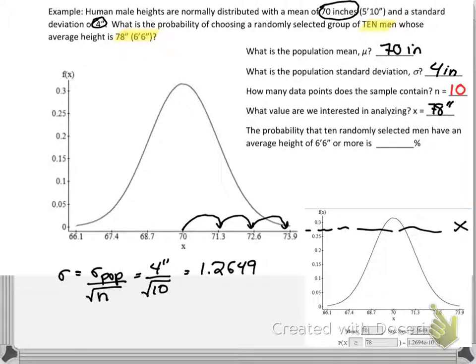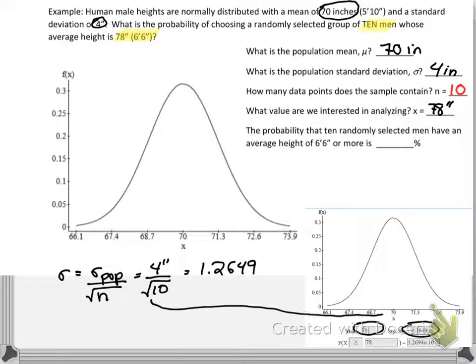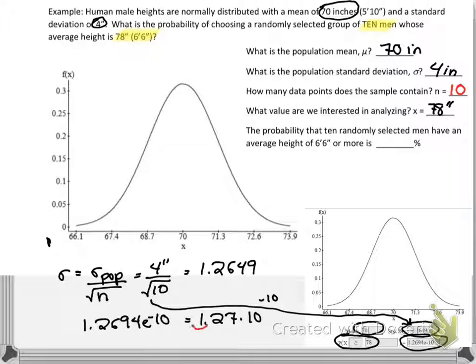So that means the area to the right of that point is going to be super, super, super small. And we can see that. Hopefully you can see down here. I did this in StatCrunch. I typed in that the mean is 70 inches. I typed in my new standard deviation using the fact that n was 10. So we have to put our new standard deviation in there. And then I asked the calculator, what is the probability of getting a value greater than or equal to 78 with this new smaller standard deviation? And I know this is kind of small font. It says it's 1.2694 e to the negative 10th. If you don't know what that means, that is scientific notation. And it's basically just 1.27 times 10 to the negative 10th. And if you wanted to write that in standard notation, you'd have to move the decimal place over nine times. Essentially, the probability is zero.